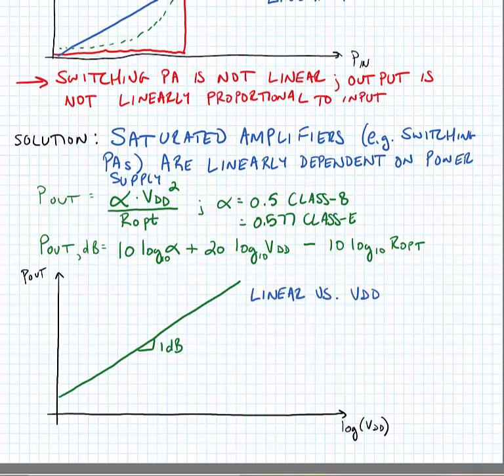This is critical - this tells us that we can make a linear amplifier if we just change the supply voltage of the amplifier, regardless of whether or not the amplifier is saturated.